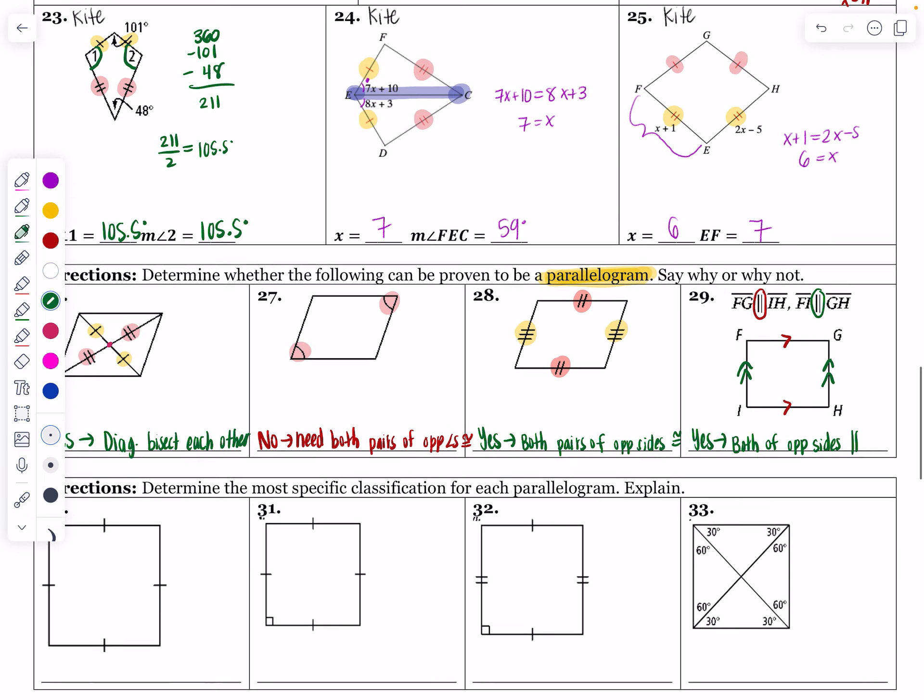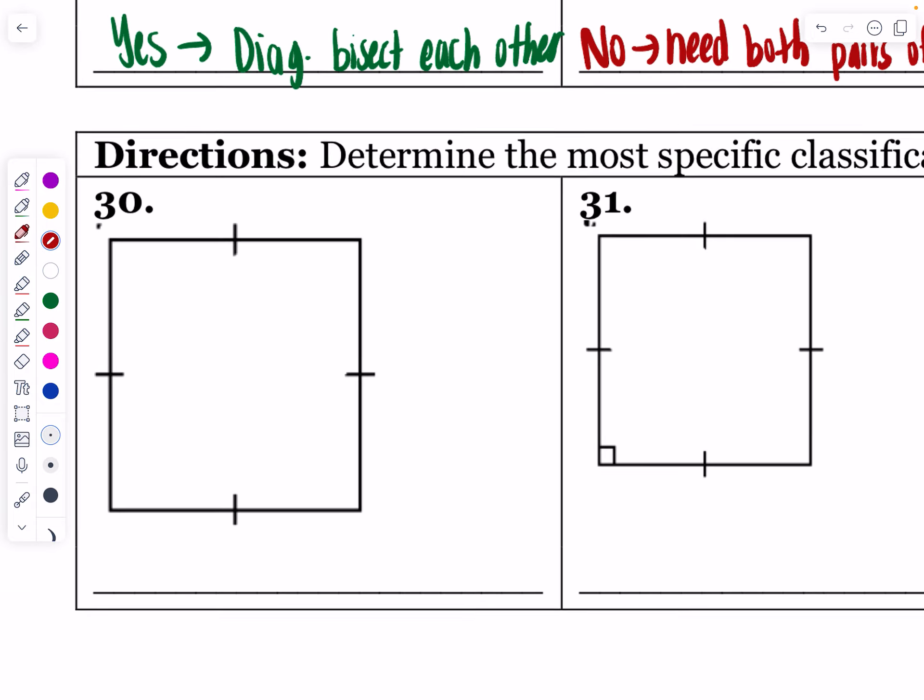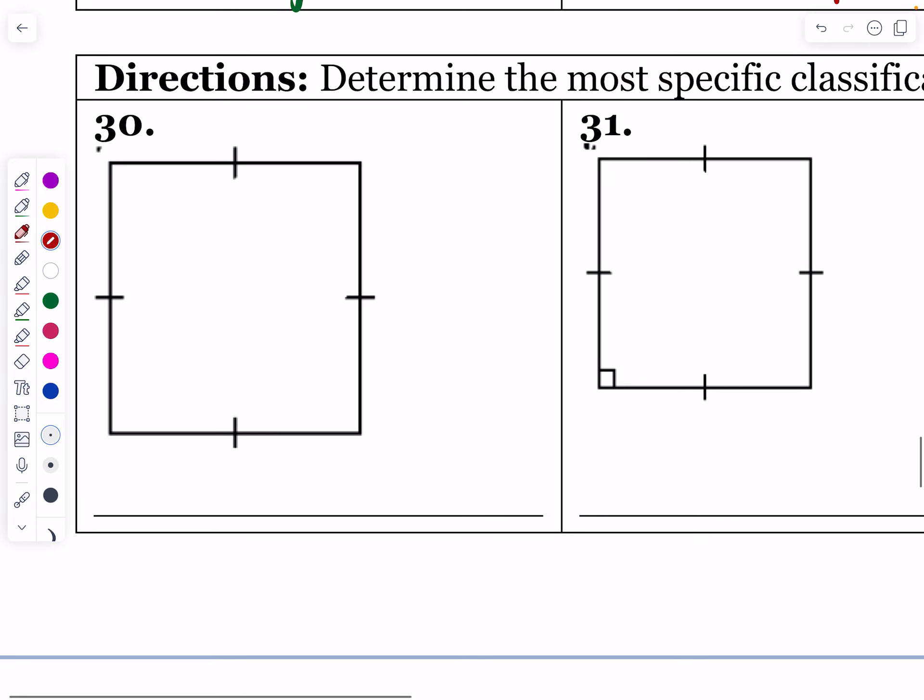The last sections for 30 through 33 say determine the most specific classification for each parallelogram. We already know that all of these are parallelograms. We're trying to determine what is the most specific type I can say. Similar to what we did above, you're going to say what information is pictured and can I make that a special parallelogram? We already know it's a parallelogram, we're trying to figure out the specific type.